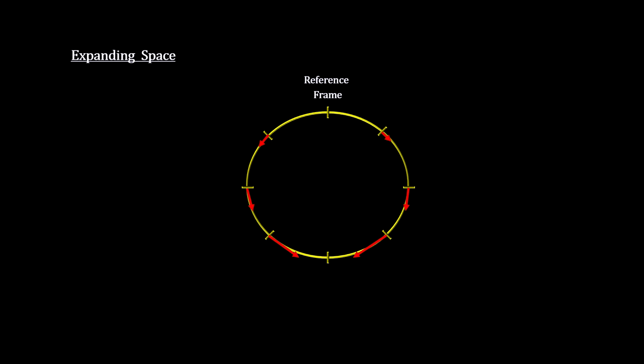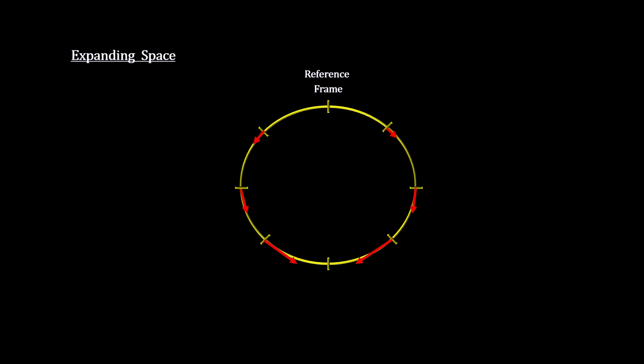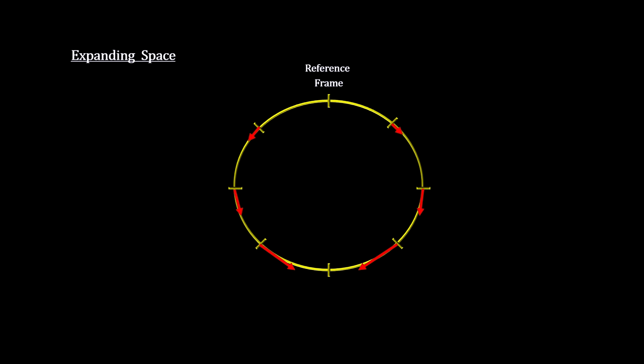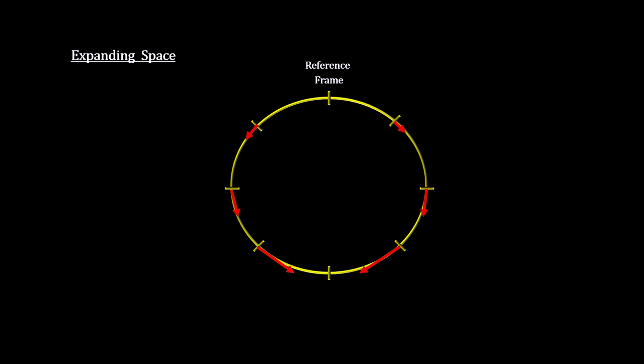But if the apparent motion is due to the amount of space expanding, we get a different picture. Here, the marks hold their position on the line, but the line grows.